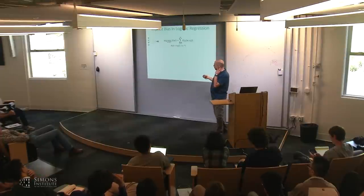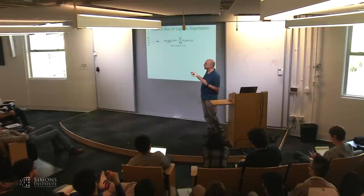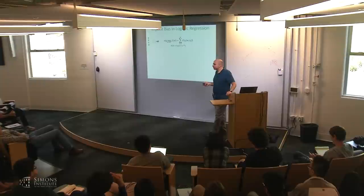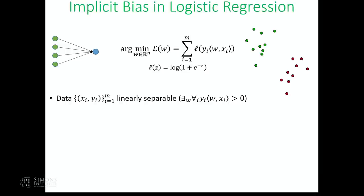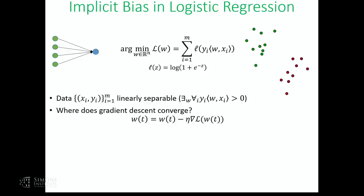What happens for the logistic loss? Let's think of the same problem — a neural net with a single unit, also known as logistic regression. We're interested in the underdetermined case where there are many ways of separating the data. What happens when you do gradient descent on the logistic loss? Where will W converge to? If the problem is linearly separable — it's going to diverge. The infimum of the loss is zero, but not attainable. You can drive the loss to zero by taking W to infinity, but you never actually reach zero.